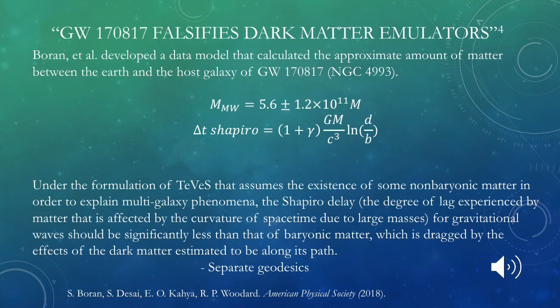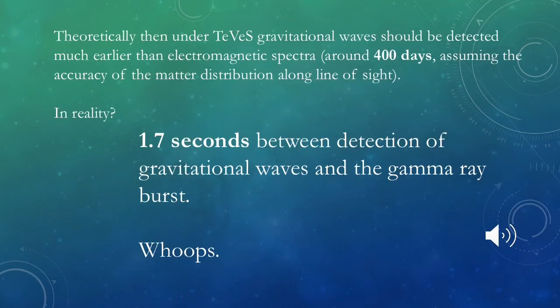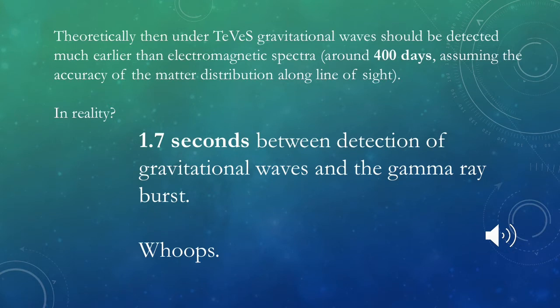Theoretically, under TeVeS, gravitational waves should be detected much sooner than the electromagnetic spectra. Based on the matter estimates calculated from Milky Way data, the predicted difference should be about 400 days between the initial detection of gravitational waves from NGC 4993 and the subsequent electromagnetic detection. In reality, the Fermi space telescope detected the gamma-ray burst just 1.7 seconds after the gravitational wave detection — a prediction of a 400-day delay compared to an empirical effect of 1.7 seconds.